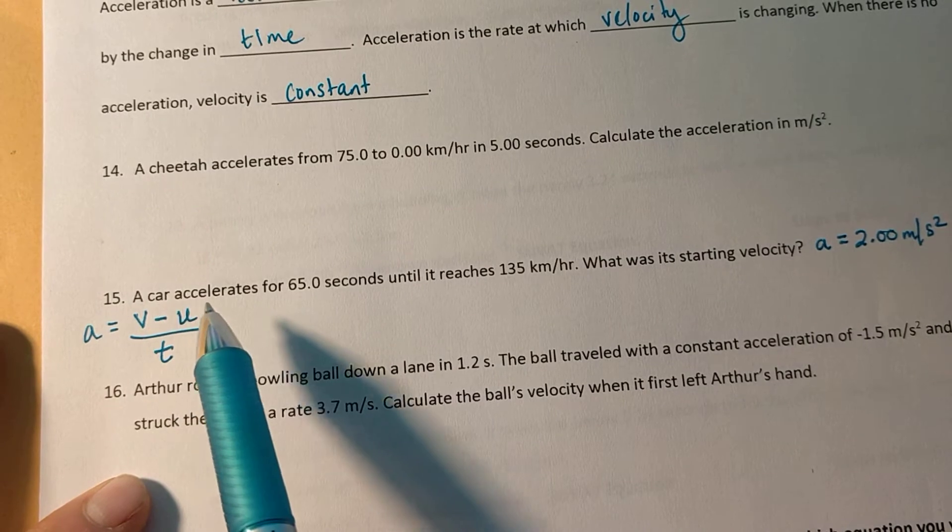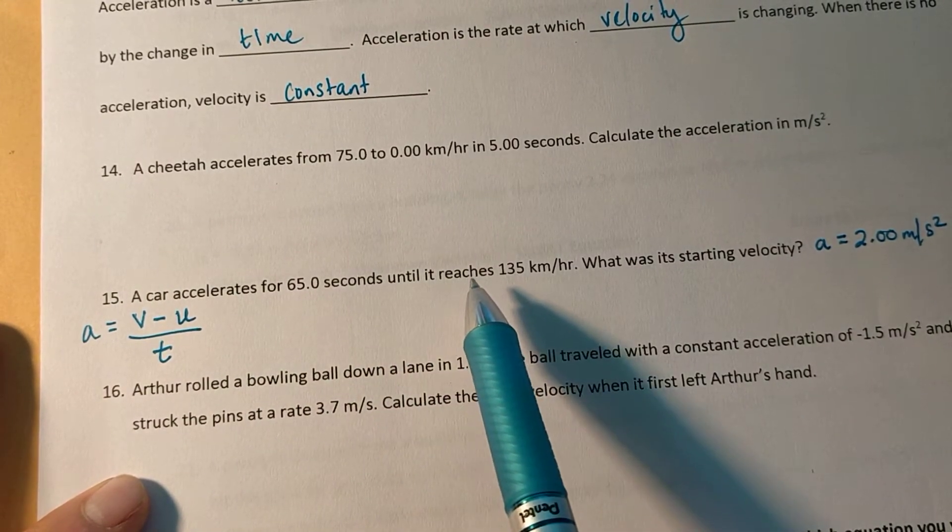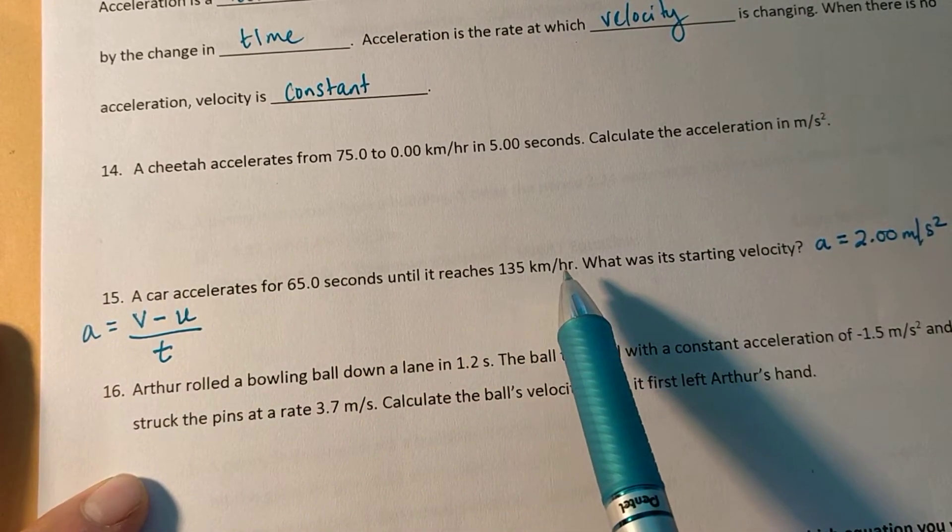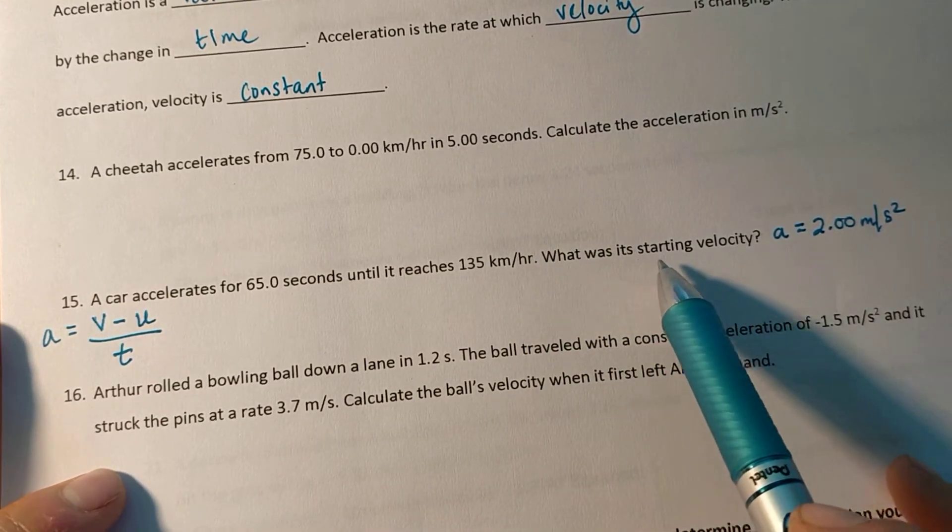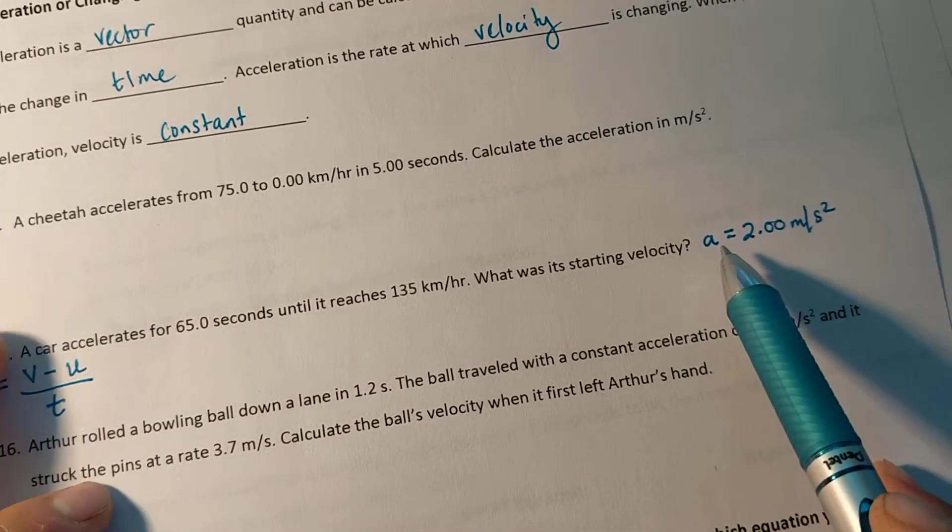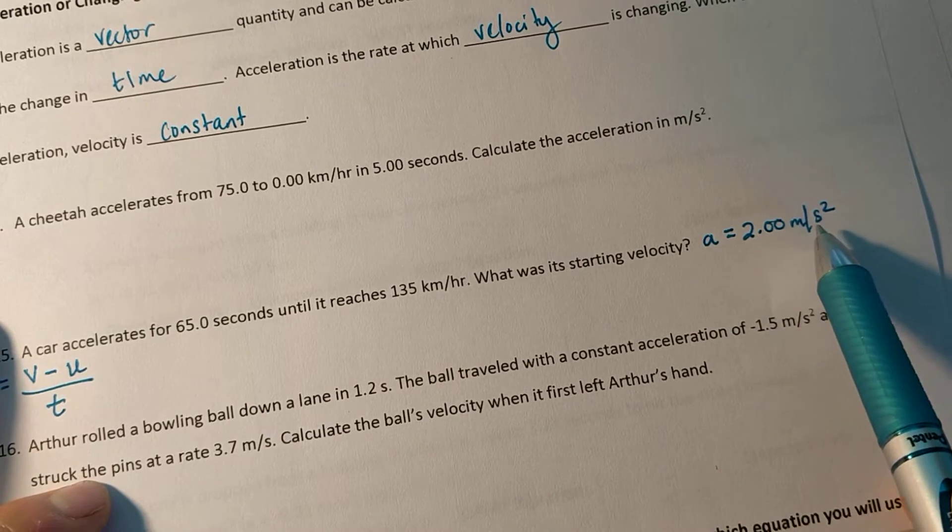So a car accelerates for 65 seconds until it reaches 135 kilometers per hour. What was its starting velocity? The acceleration you need to add is 2 meters per second squared.